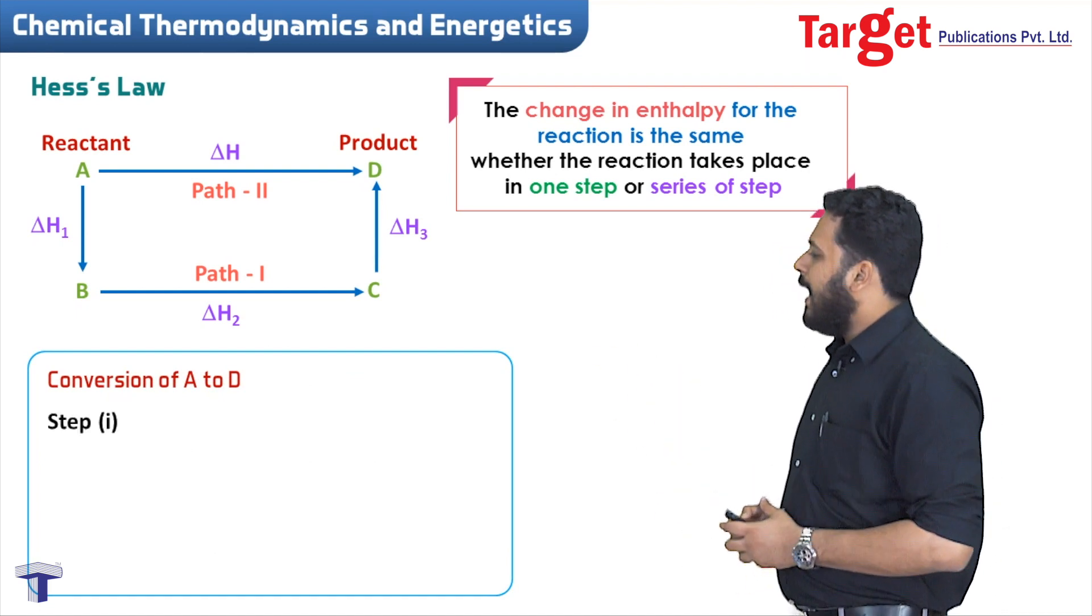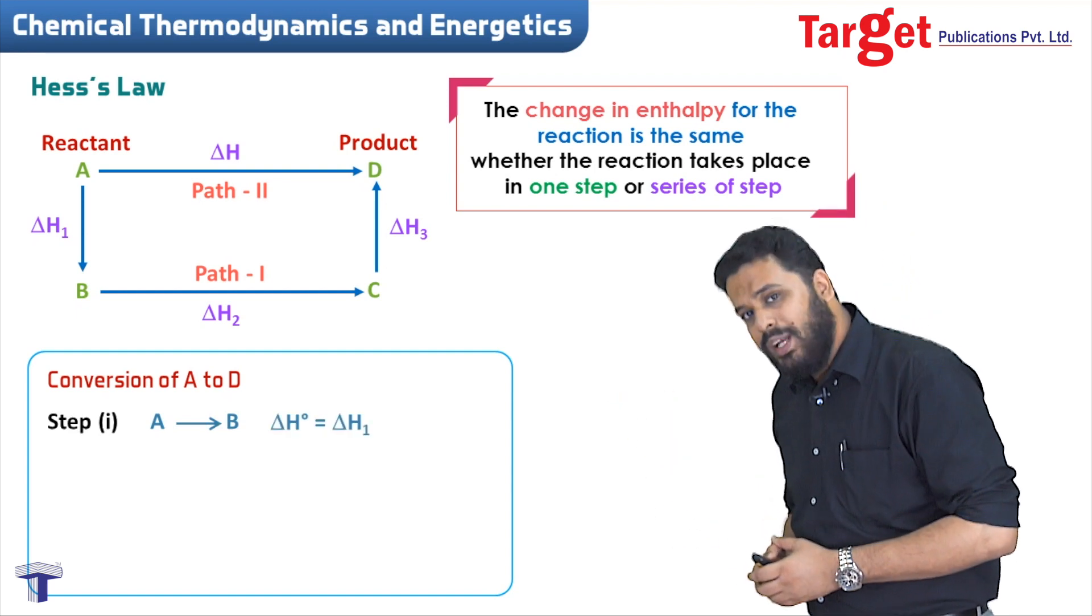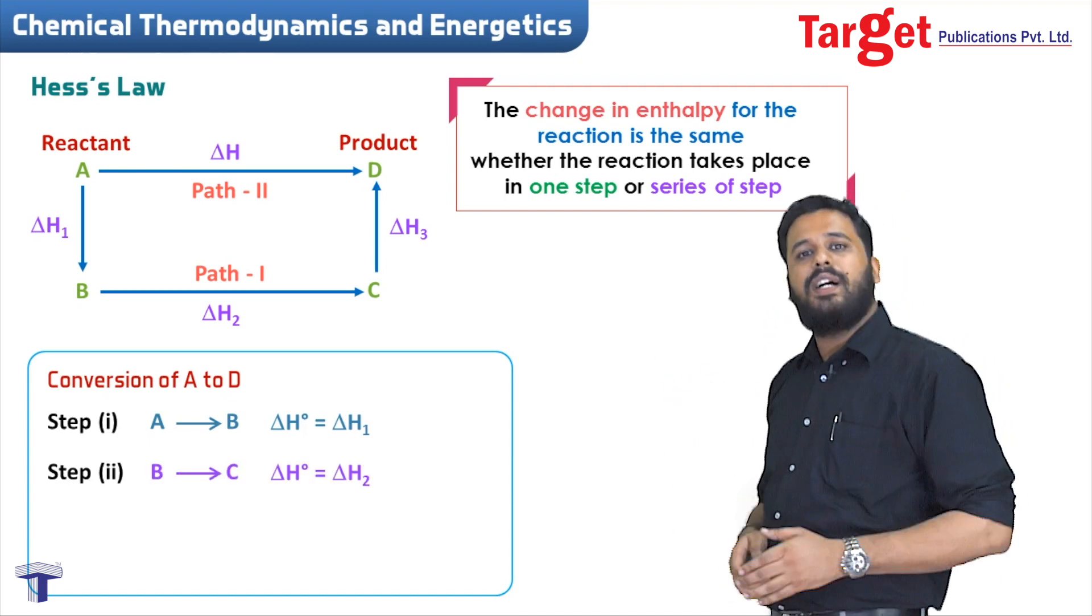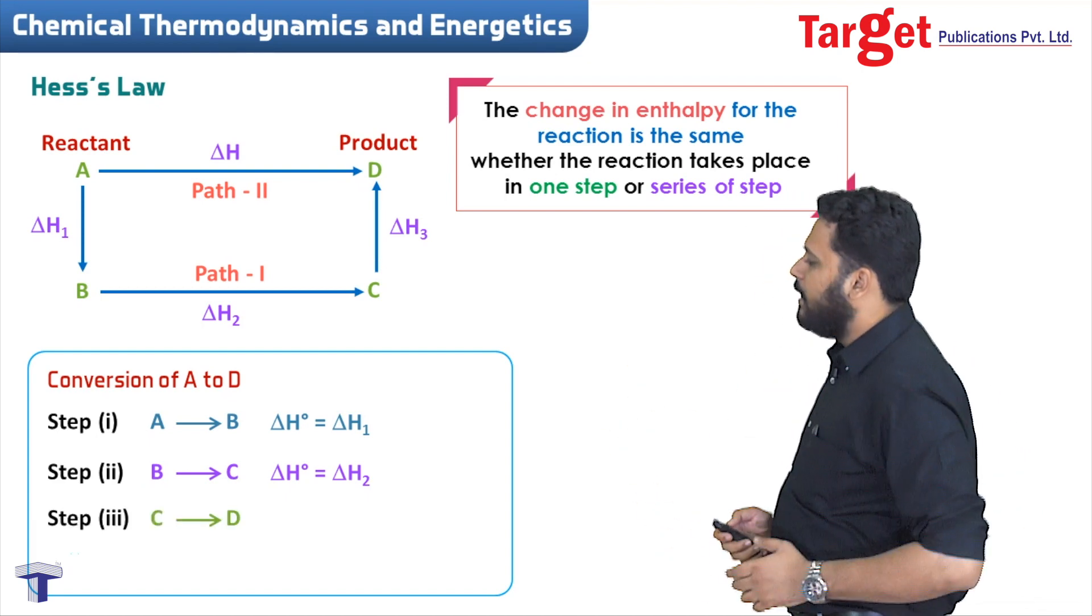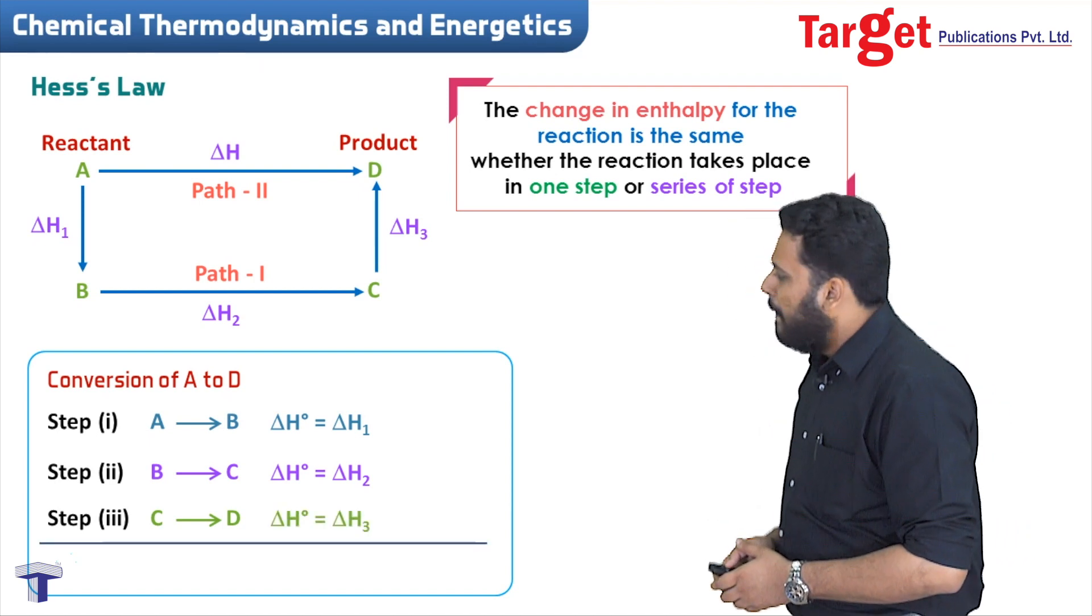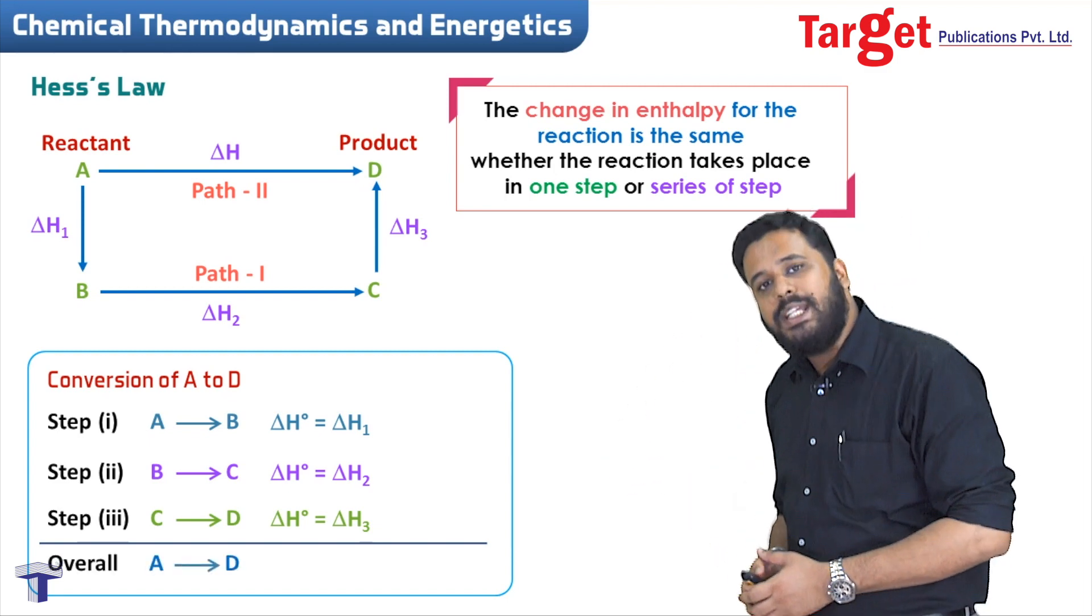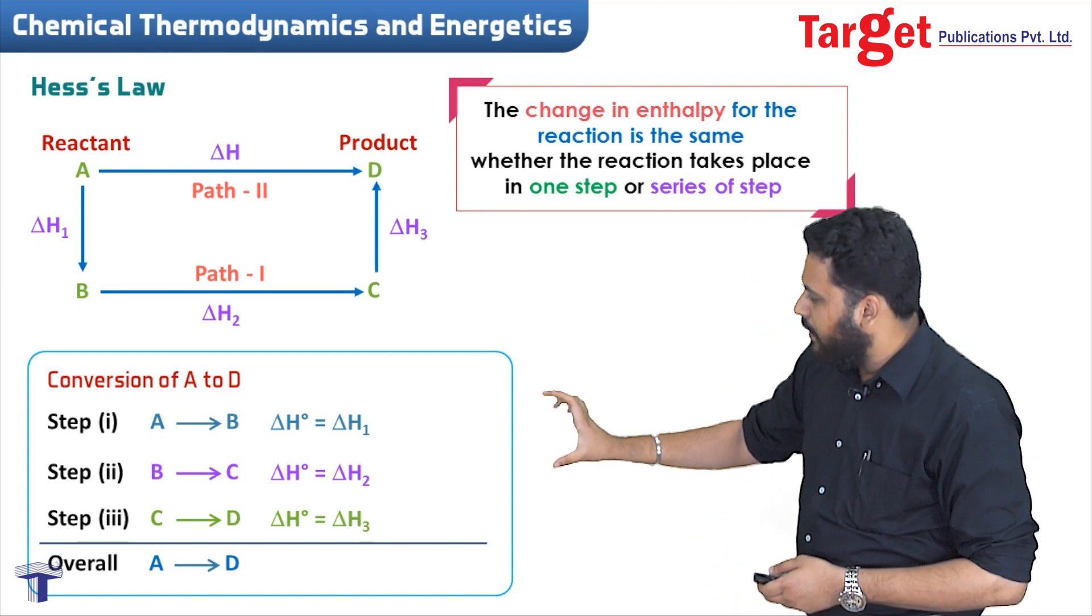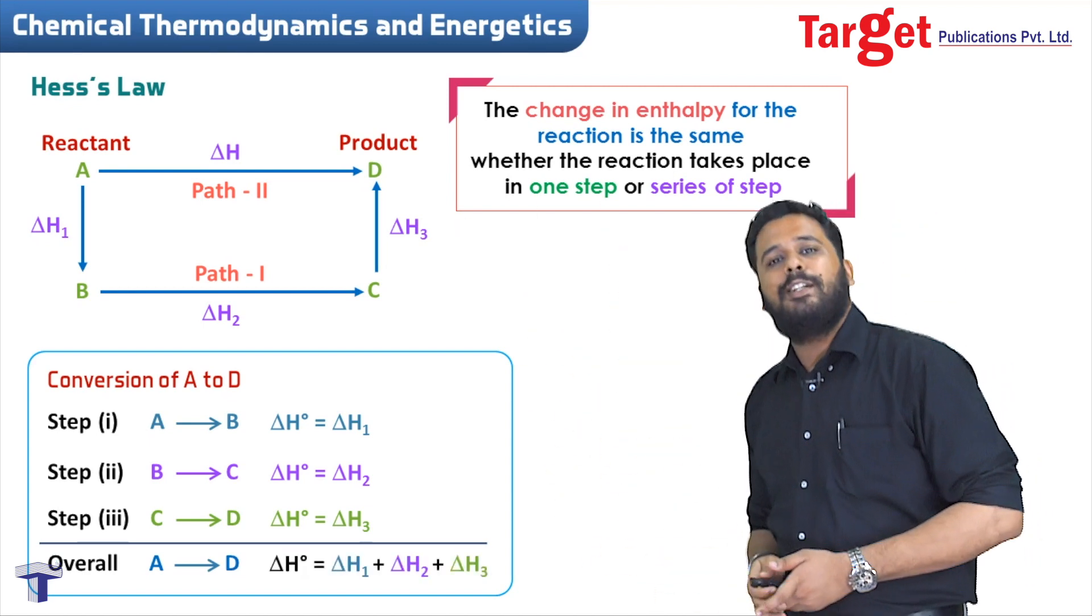We can also look at it this way: in the conversion from A to D, in the first step where A converts to B, let's say the value of delta H is delta H1. In the second step where B converts to C, the value is delta H2. In the third step where C converts to D, the enthalpy change is delta H3. If you add up all the equations and get the direct equation from A to D, you'll find that delta H1 plus delta H2 plus delta H3 equals delta H.